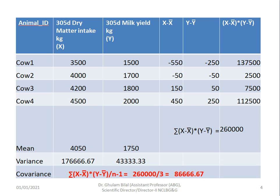So the covariance, from our formula, is the summation of (x minus x̄)(y minus ȳ) divided by n minus 1. We have four cows, so n equals 4, and 260,000 divided by 3 gives us 86,666. This is our covariance.